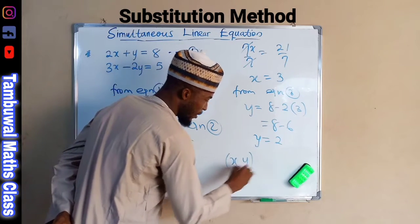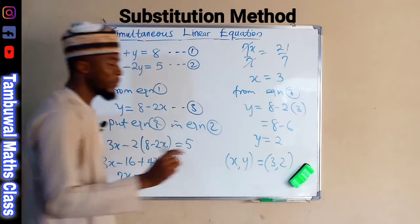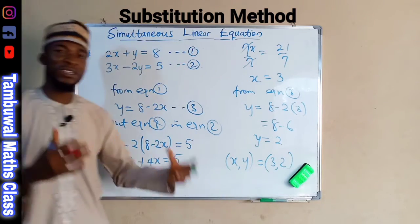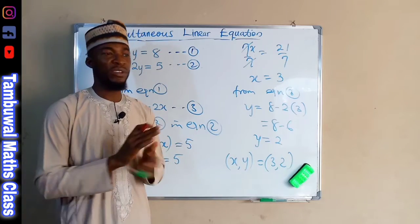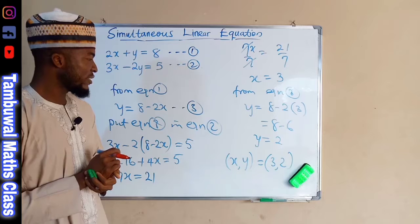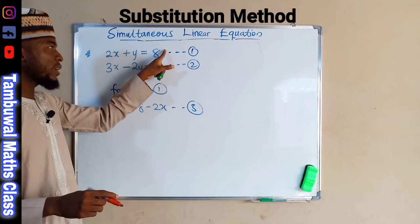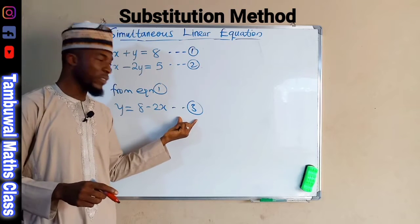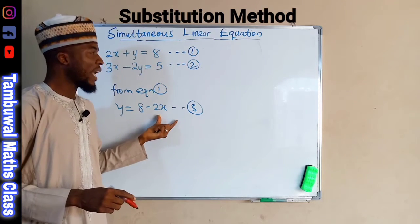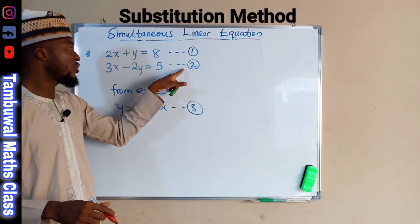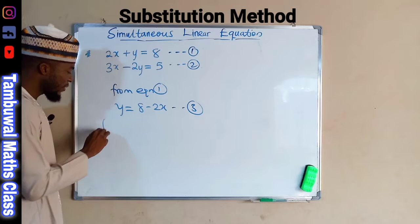Hence y equals positive 2, so x and y are 3 and 2 respectively. There are two forms of substitution I want to illustrate. In the first form I used equation 1 to form equation 3, making y the subject. I can equally do the same with equation 2 to make y the subject of that equation.